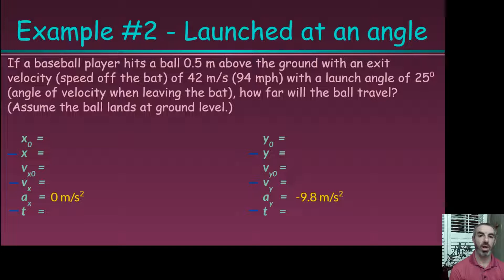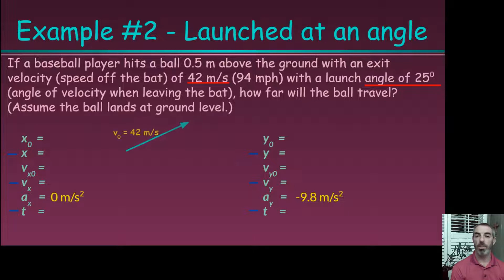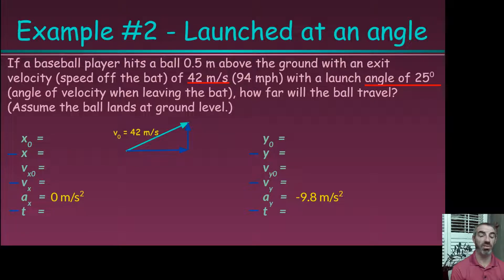Fill in our accelerations for the horizontal and vertical directions: zero in the horizontal, and the vertical is in free fall, so negative 9.8 meters per second squared. Then we draw a diagram of the velocity. We know it's 42 meters per second at a 25 degree angle, and now we have to break that angle down into its horizontal and vertical components.